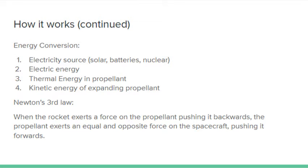The electricity is converted into thermal energy in the propellant through a variety of different possible methods, turning the propellant into a plasma. The thermal energy is then converted into kinetic energy as the hot, expanding plasma is forced out of the nozzle of the rocket at high velocity.